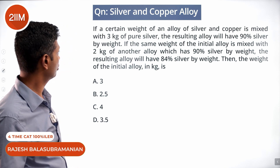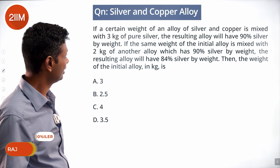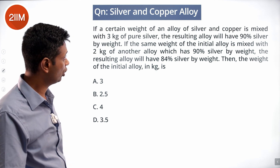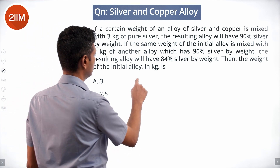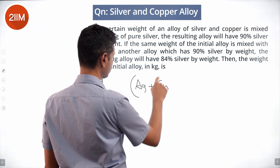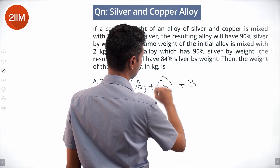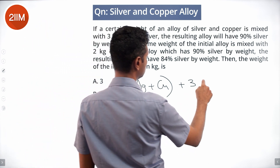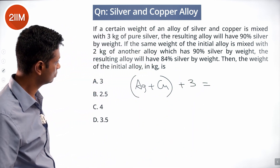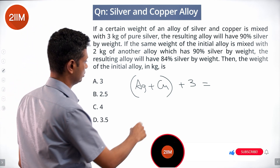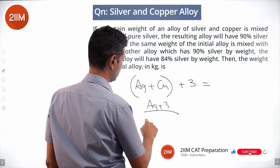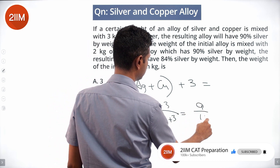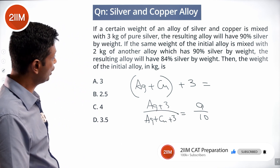If a certain weight of an alloy of silver and copper is mixed with 3 kg of pure silver, the resulting alloy will have 90% silver by weight. So for the alloy: silver (Ag) plus copper (Cu) in the initial alloy, plus 3 kg pure silver, gives 90% silver. This means Ag plus 3, divided by Ag plus Cu plus 3, equals 9 by 10.